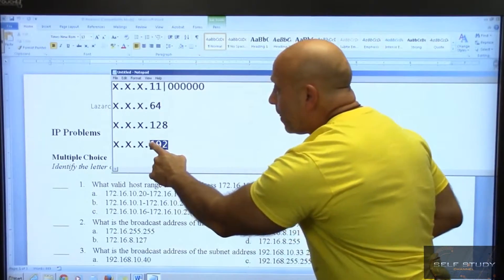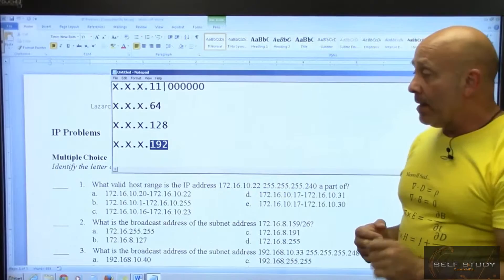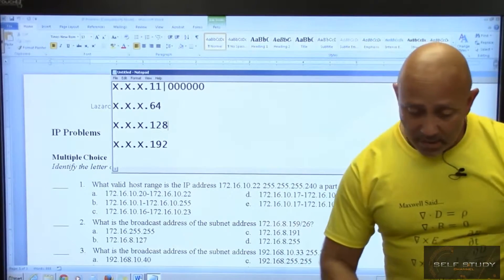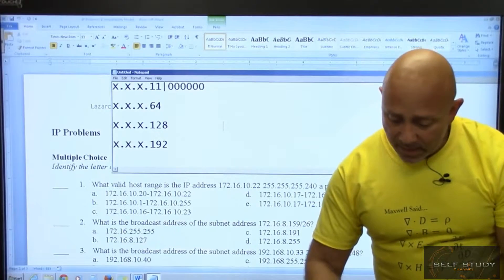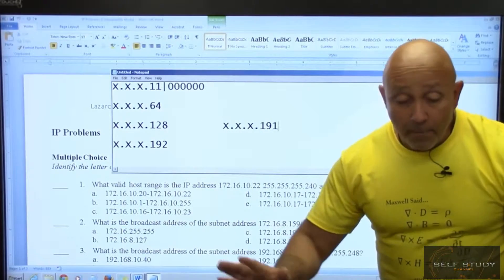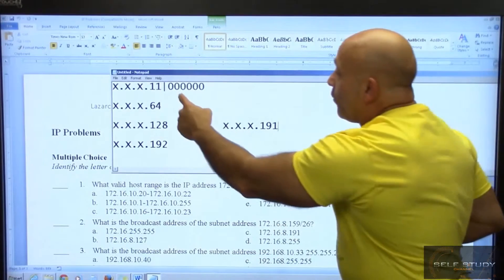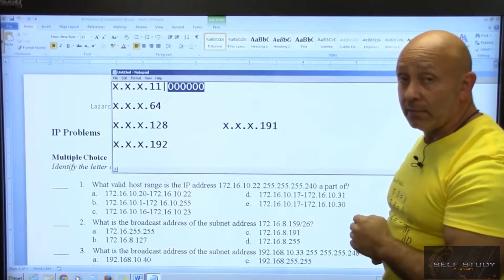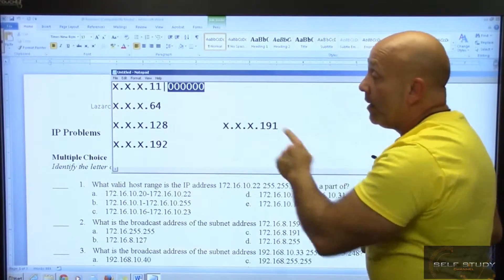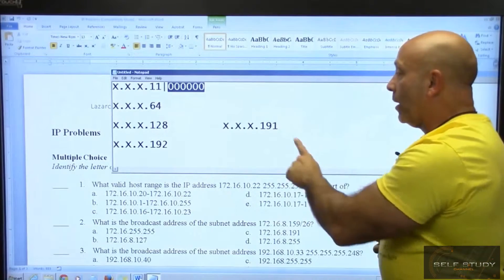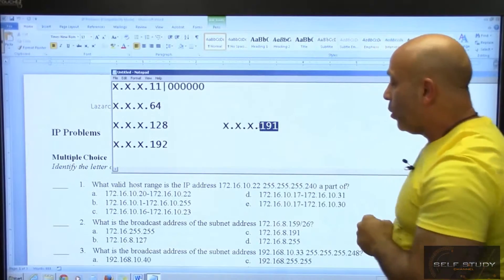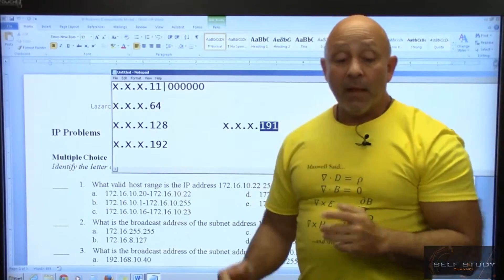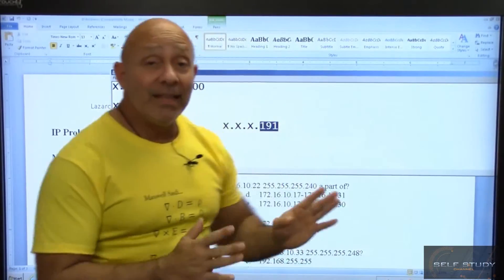Now in our previous example I said that one less than this network is this guy's broadcast. So the broadcast here is X.X.X.191. But let's prove that. If we add these bit values, which is 63 because there's always one less than the increment, 63 and 128 equals 191. So the answer is 191, and that would be C.